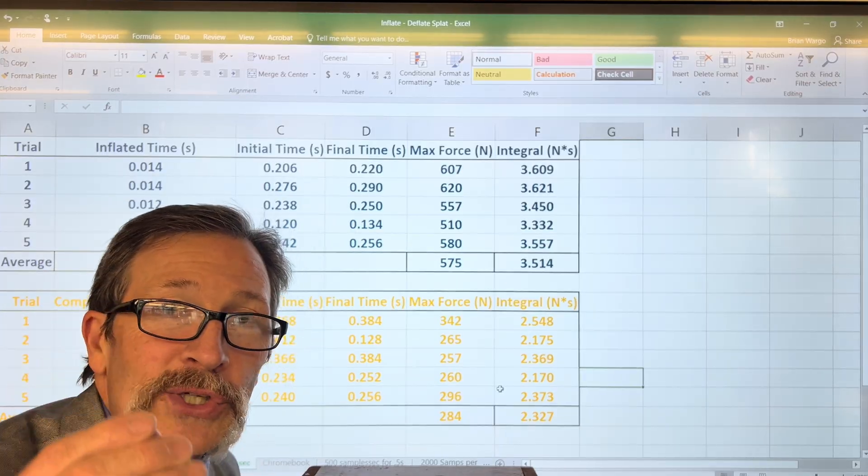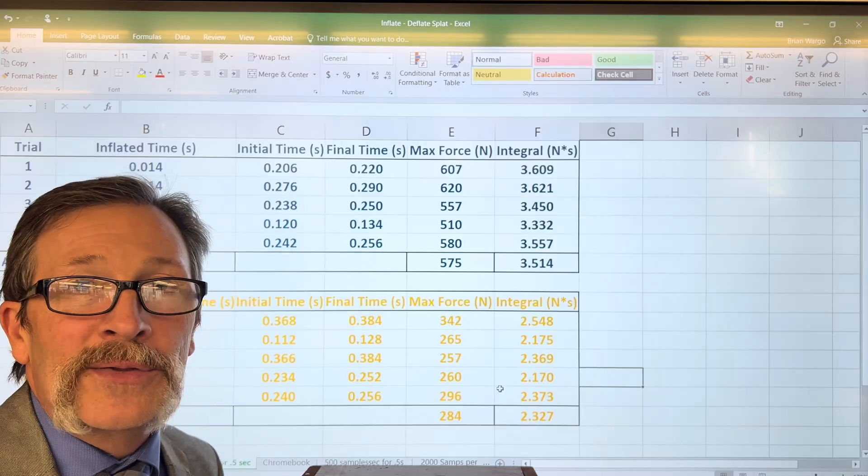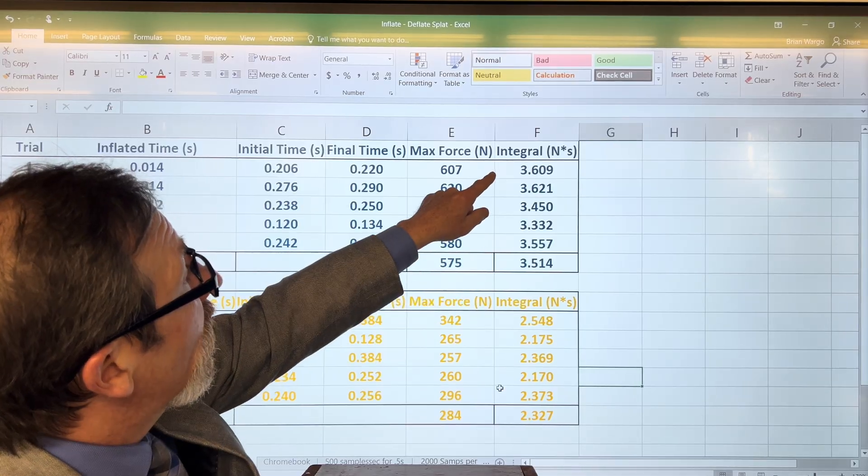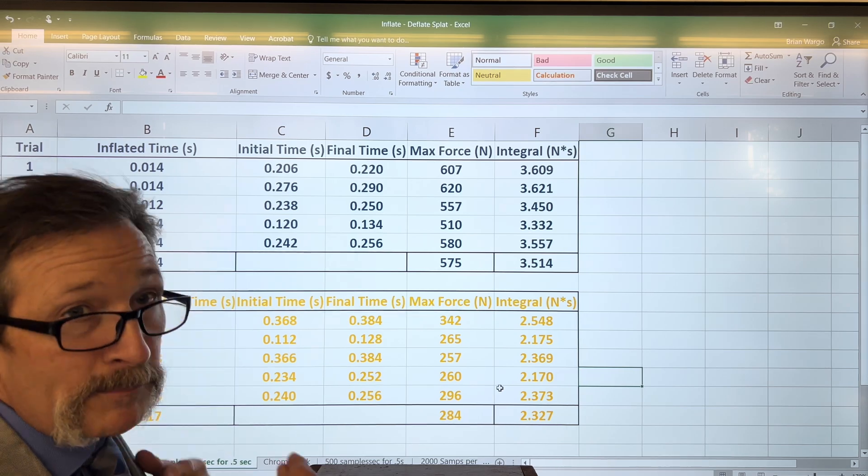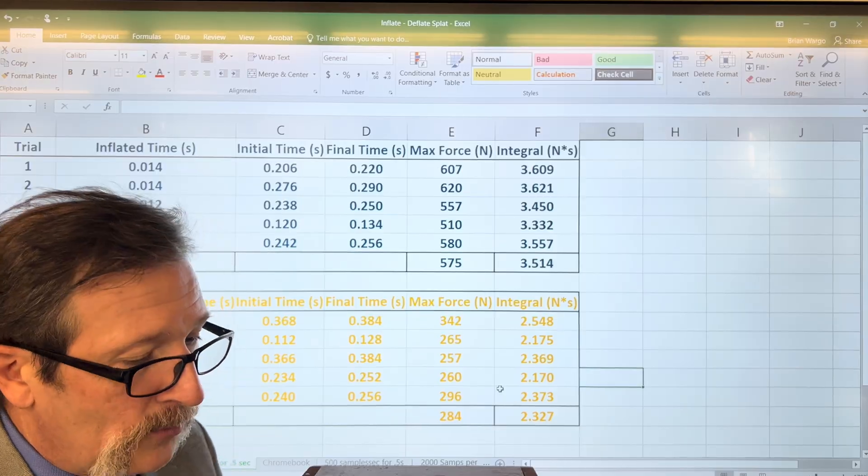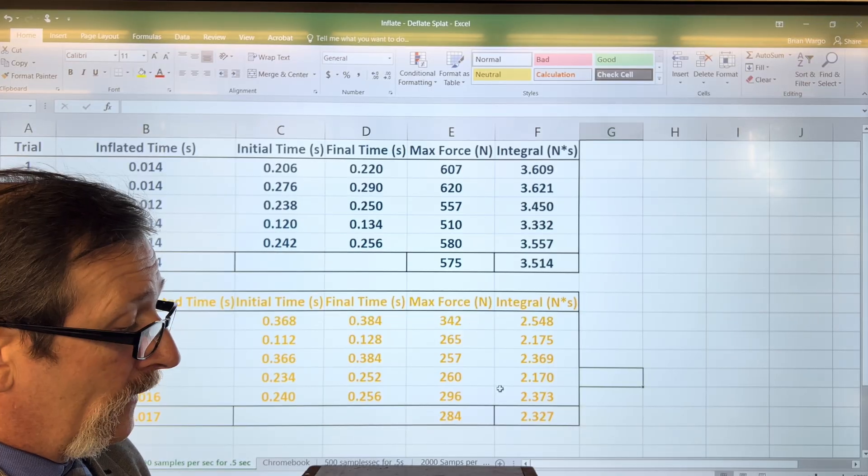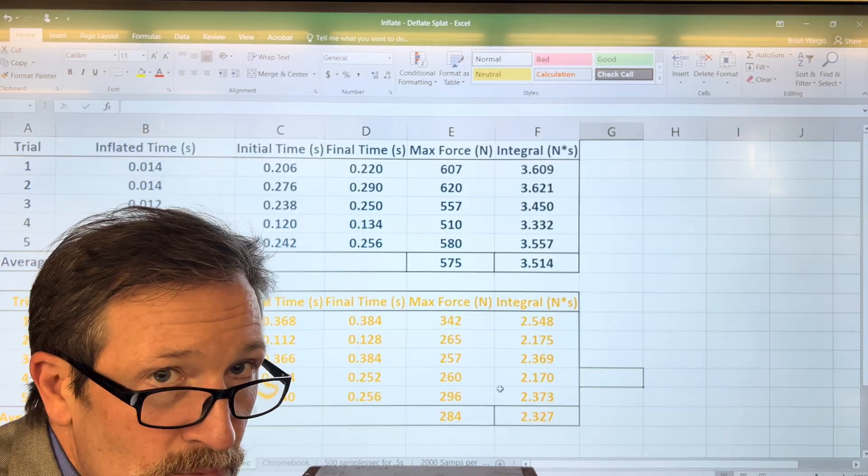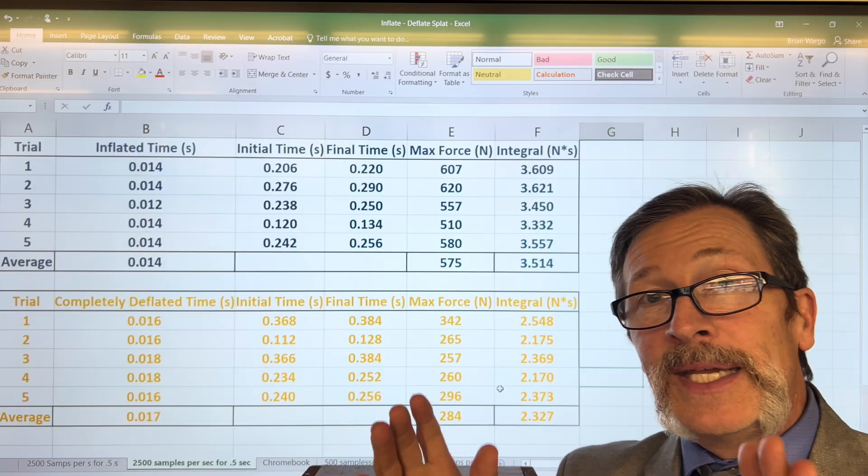But what you can then do is say remember, we can take this integral, that is the area under the curve. That's going to talk about our force and our time. When we look at this integral, on average we get 3.5 for the ball that bounces and for the deflated, 2.3. Let's take 2.3 divided by our 3.5, and that's about 0.65. Remember that number because we're going to end up talking about the rest of the data with the integration.